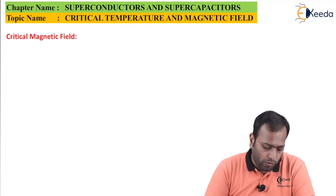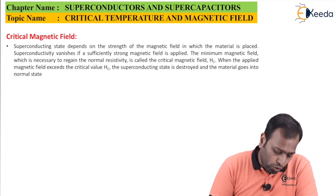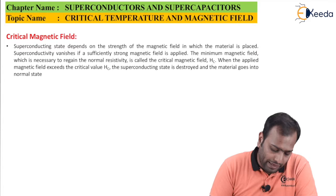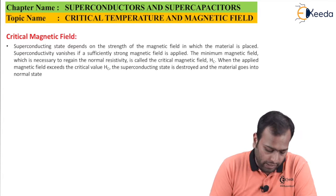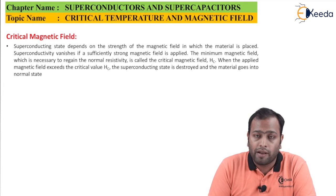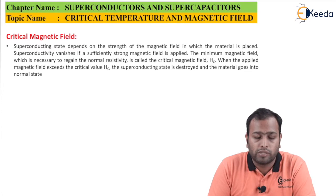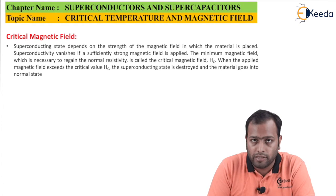Now, let's talk about critical magnetic field. Superconducting state depends on the strength of the magnetic field in which the material is placed. Superconductivity vanishes if sufficiently strong magnetic field is applied. If you apply a very strong magnetic field, of course, the material's superconducting state or superconducting property is going to vanish.